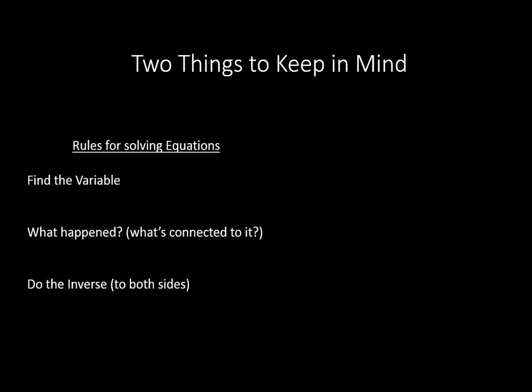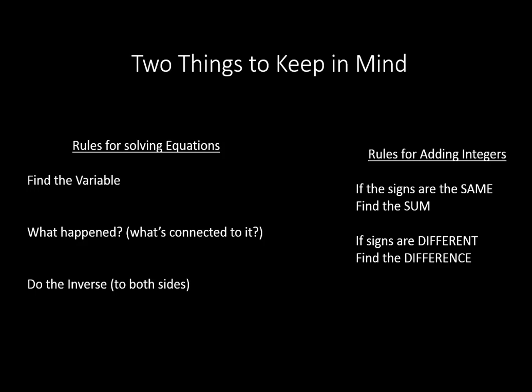So there's two things to keep in mind when you're solving for x with addition of positive decimal equations. One, you have to remember the rules for solving equations: find the variable, say what happened or what's connected to it, and then do the inverse to both sides of the equation. Also, remember the rules for adding integers. If the signs are the same, you find the sum. If the signs are different, you find the difference.